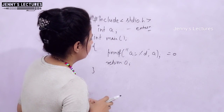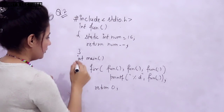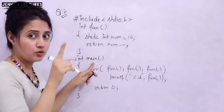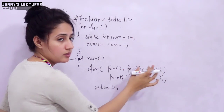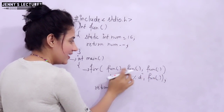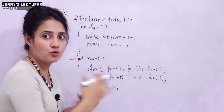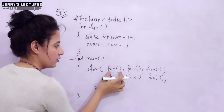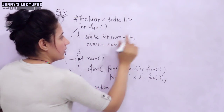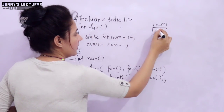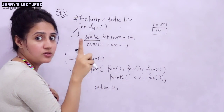The second question uses the static storage class. The control will go to the main function, where we have a for loop. The first statement is initialization, then condition check, then the update (increment or decrement). In all three places we are calling the fun function. Inside the fun function, we have a variable: static int num = 16. This is static — you have to keep in mind the property of the static keyword.